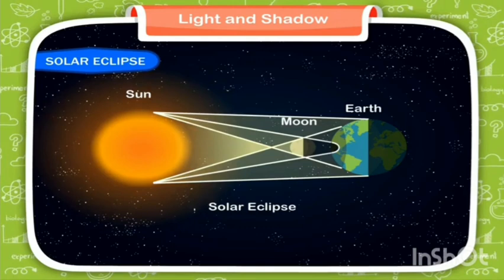During a solar eclipse, the dark part of the Moon is facing the Earth. Therefore, solar eclipse always occurs on a new moon day.